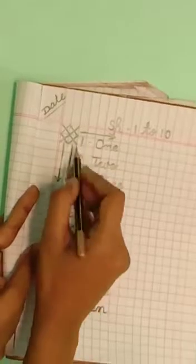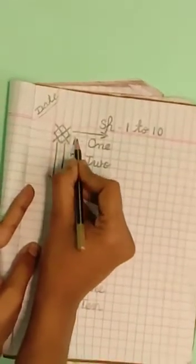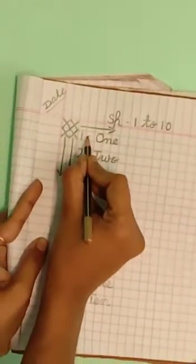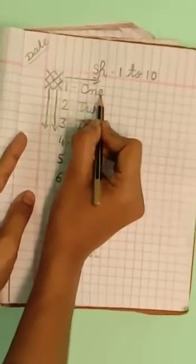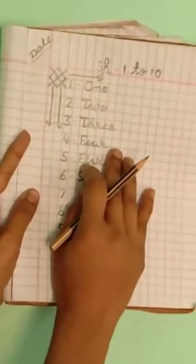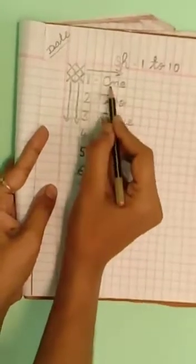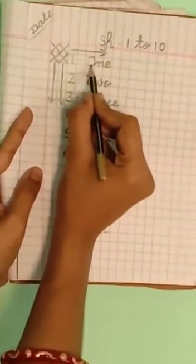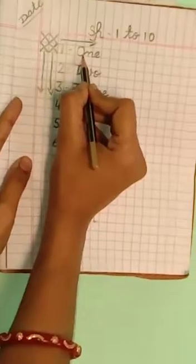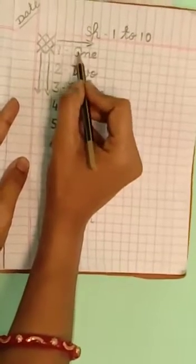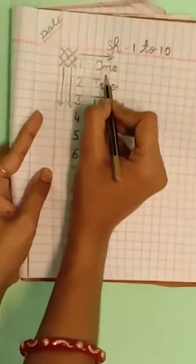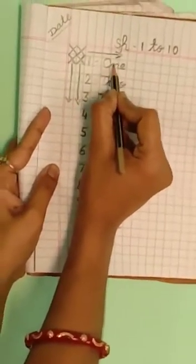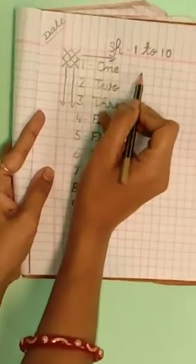1. This is 1. Here give dash, O-N-E. 1 One spelling, say with me, O-N-E. First letter you write in always capital letter. O-N-E. This one is joining letter.